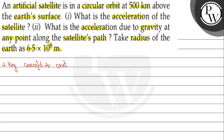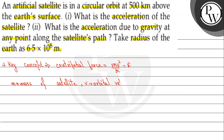First, we have to take centripetal force. The formula for centripetal force is mv²/r. Here m represents mass of the satellite, v represents orbital velocity, and small r represents radius of orbit.